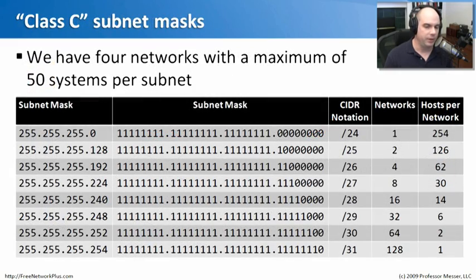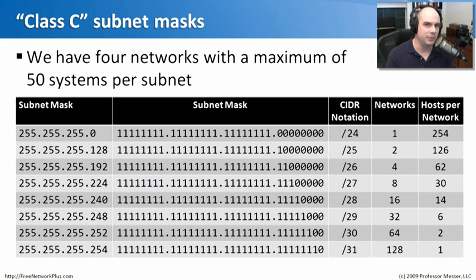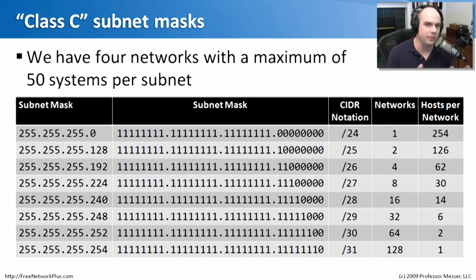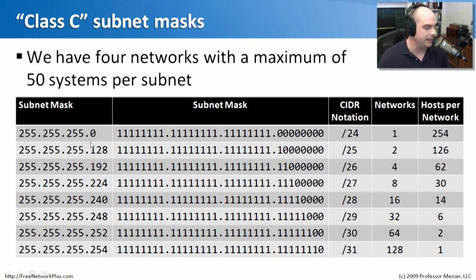If we're going to start subnetting our network, we could sit down and do all the binary calculations ourselves. But fortunately, someone's already done that for us, and there are plenty of IP address calculators on the internet. The sneaky part is that we have to know how to do this calculation for our exam. But in the real world, we just grab a subnet calculator, type in our IP address and subnet mask, and have the calculator tell us our options. Here's a chart that does exactly that. The subnet mask they gave us was 255.255.255.0.